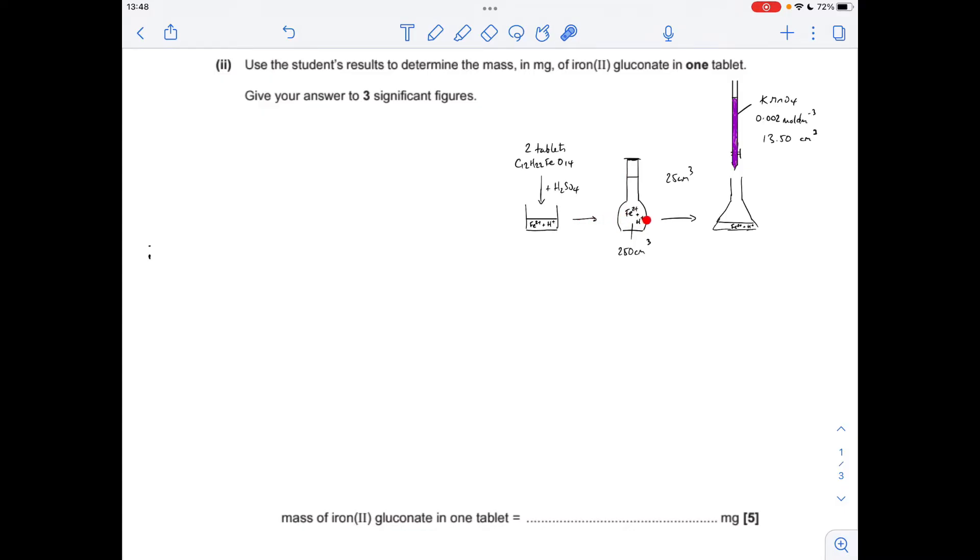So in there we've got Fe2+ and H+ ions that's gone into a 250 cm cubed volumetric flask. They've taken out 25 cm cubed so a tenth effectively and then they've carried out the titration with this lower concentration KMnO4 and the mean titre is 13.5 centimeters cubed.